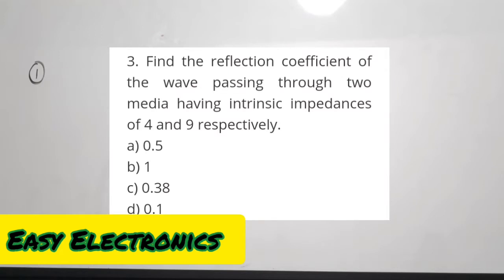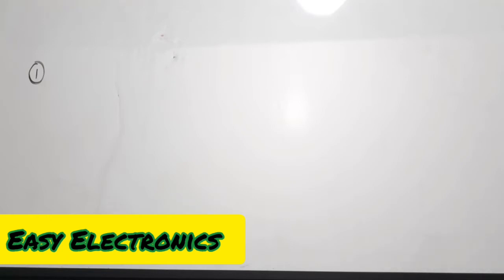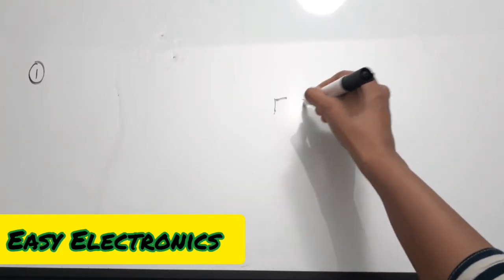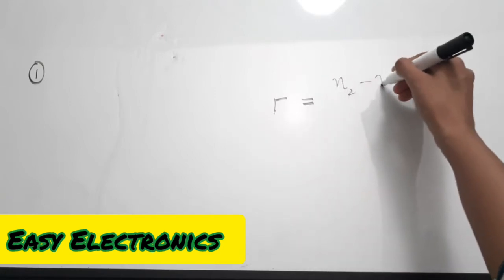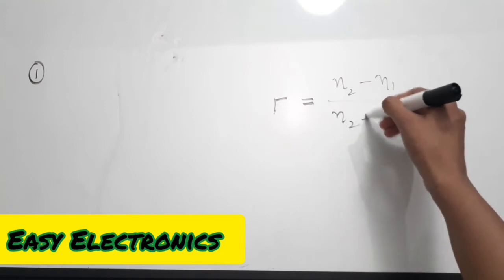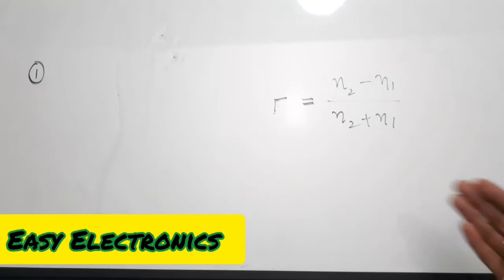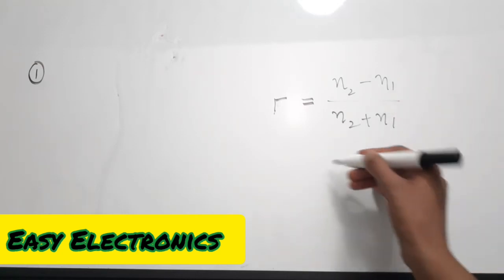Let's see the solutions to the 10 questions. The first question is: find the reflection coefficient of a wave passing through two media having intrinsic impedances of 4 and 9 respectively. There are two mediums whose intrinsic impedances have been given and you need to find the reflection coefficient. The equation for reflection coefficient in terms of intrinsic impedances is: reflection coefficient tau equals eta-2 minus eta-1 divided by eta-2 plus eta-1. Here eta-2 is the intrinsic impedance of the second medium and eta-1 is the intrinsic impedance of the first medium.